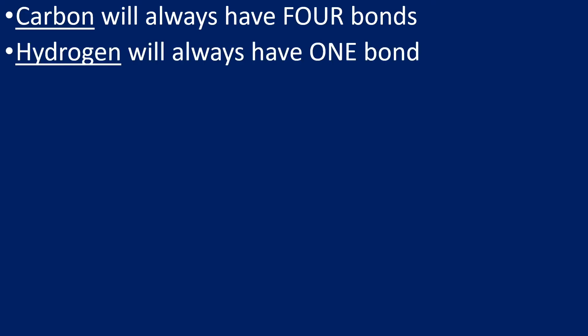Some basic rules to start with: when we draw organic molecules, carbon always has four bonds — whether that's four single bonds, or a double bond and two single bonds, it will always have a total of four bonds. Hydrogen will always have a single bond; hydrogen only ever has one bond.